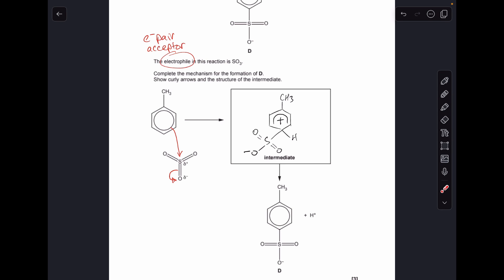So what happens is a pair of electrons in that CH bond back into the ring and that would reform the delocalized ring of pi electrons and it would kick out that hydrogen as an H+ ion.